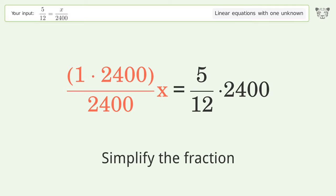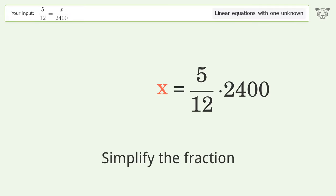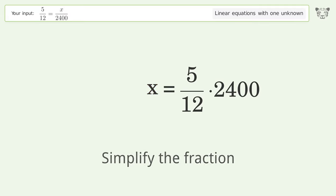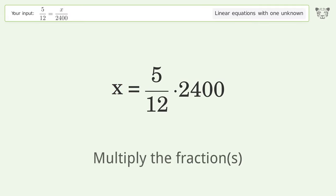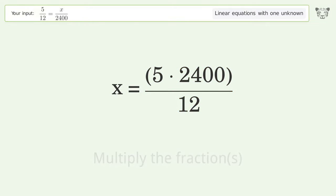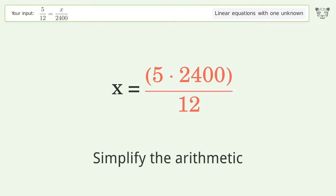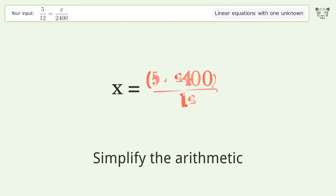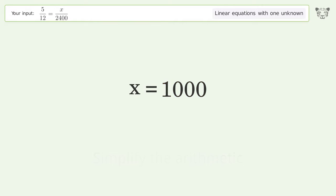Simplify the fraction. Multiply the fractions. Simplify the arithmetic. And so the final result is x equals 1000.